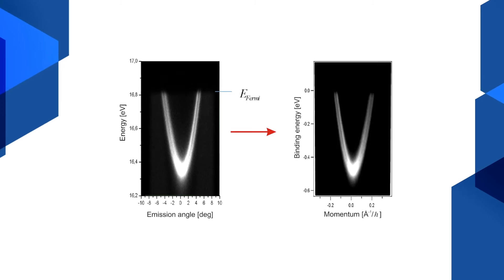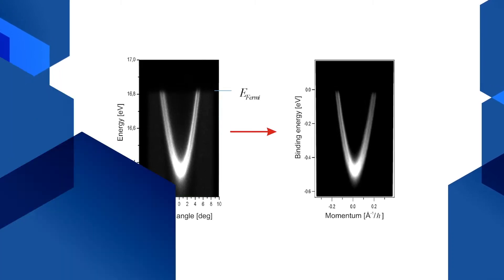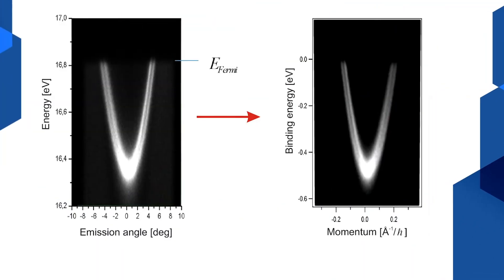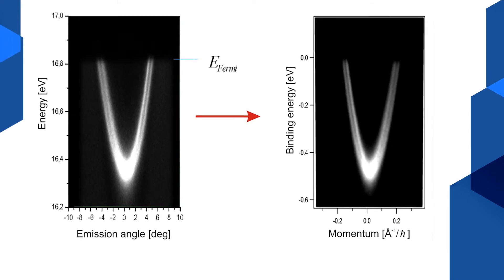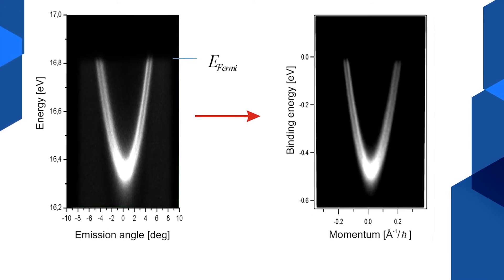Here we see a simple example for free electrons on the gold surface. Looking closer, we see that the free electron parabola is doubled. Apparently, there is more complexity involved. In fact, inside the solid, electrons are never completely free. There are many electrons in the solid — they belong to different groups. We call them bands.